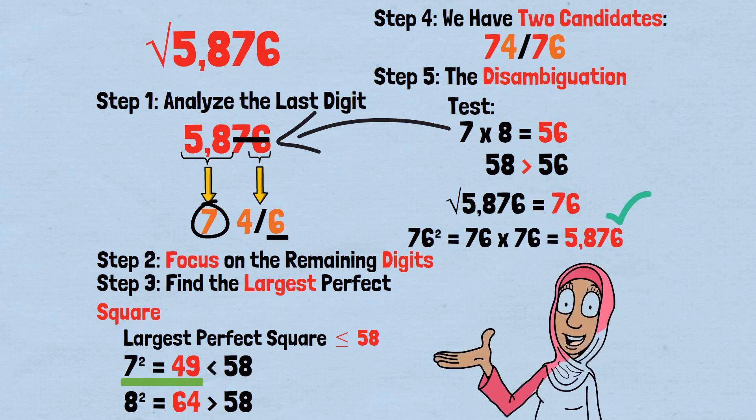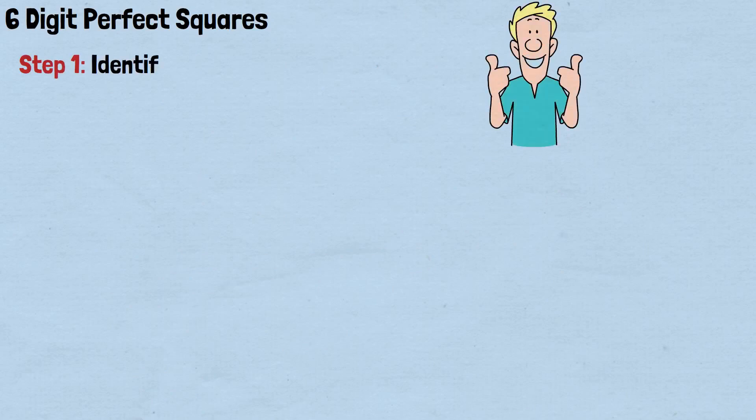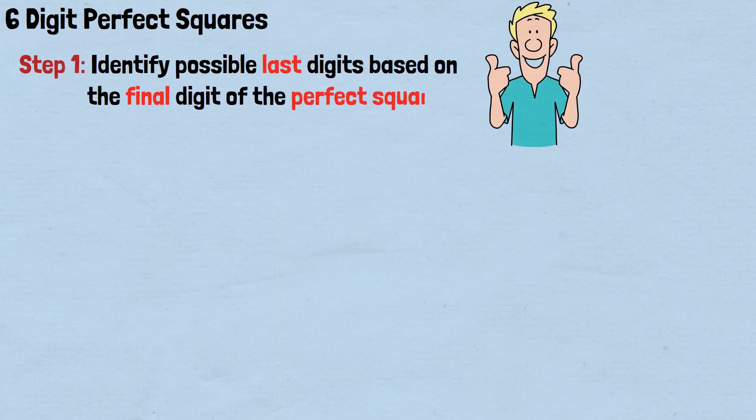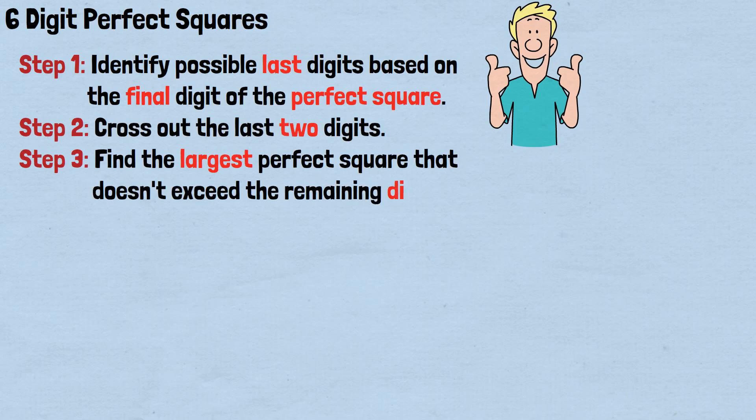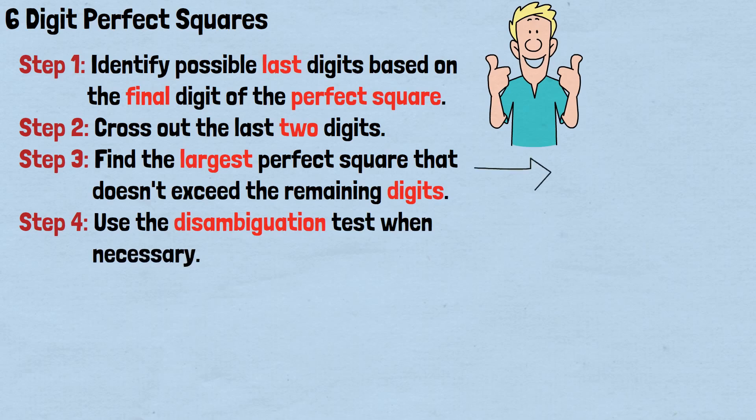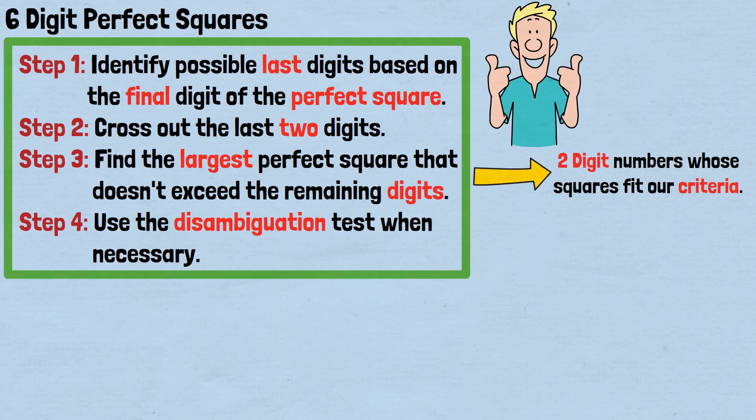The beauty of this system is that it scales seamlessly to even larger numbers. For 6-digit perfect squares, which have 3-digit square roots, the process remains fundamentally the same. Step 1: Identify possible last digits based on the final digit of the perfect square. Step 2: Cross out the last two digits. Step 3: Find the largest perfect square that doesn't exceed the remaining digits. Step 4: Use the disambiguation test when necessary. The only difference is that Step 3 now involves finding 2-digit numbers whose squares fit our criteria, but the logical structure remains identical.